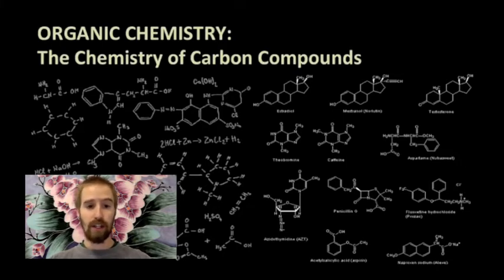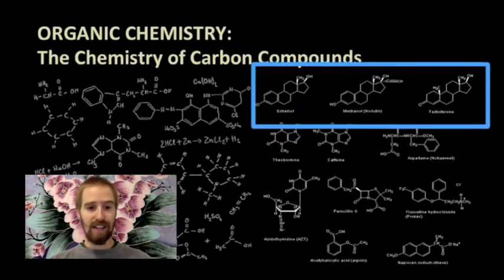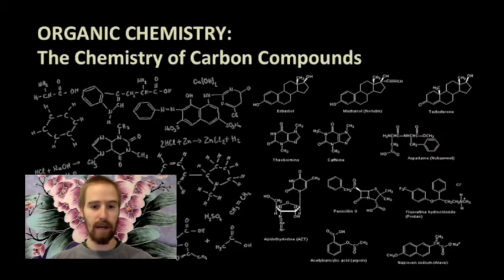One important thing to note when you look at these kinds of molecular diagrams is that since these molecules contain so many carbon atoms, often scientists won't even bother to draw them all in. For example, on this side of the slide we see a lot of rings made up of just single and double lines, but no letters. These lines represent covalent bonds between carbon atoms, and at each bend or intersection we would find one of those carbon atoms.